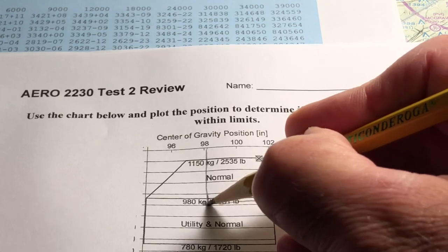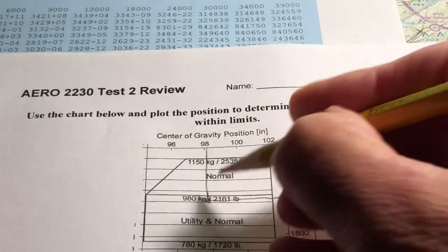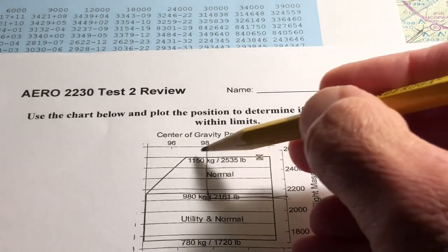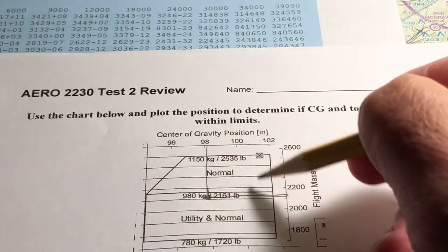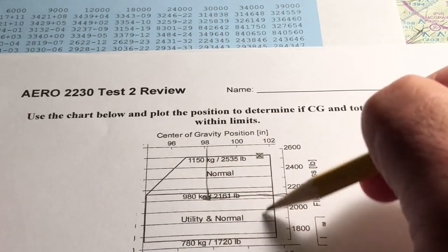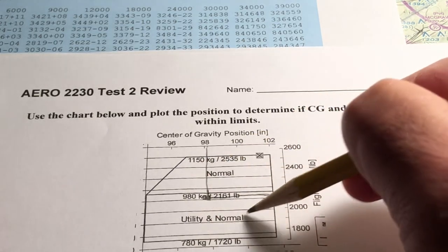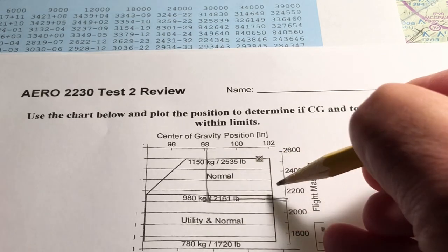We find that the weight and balance, the CG, does fall within the weight and balance limitations when it falls within this envelope or this graph. As a matter of fact, because it falls below this line, it is within the weight and balance limits for utility category aircraft.